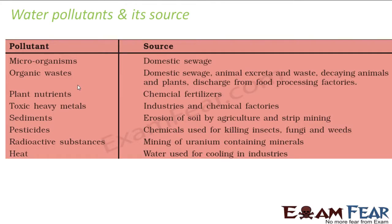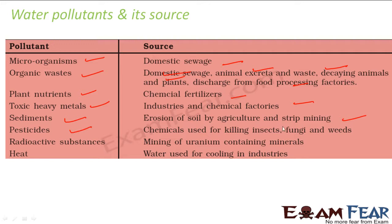We will see some of the water pollutants and their sources. The pollutants include microorganisms from domestic sewage; organic waste from domestic sewage, animal excreta, decaying animals and plants, and food processing industries; plant nutrients from chemical fertilizers; toxic heavy metals from industries; sediments from soil erosion; pesticides including insecticides, fungicides, and herbicides from agriculture; radioactive substances from mining and nuclear plants; and heat used for cooling in industry.